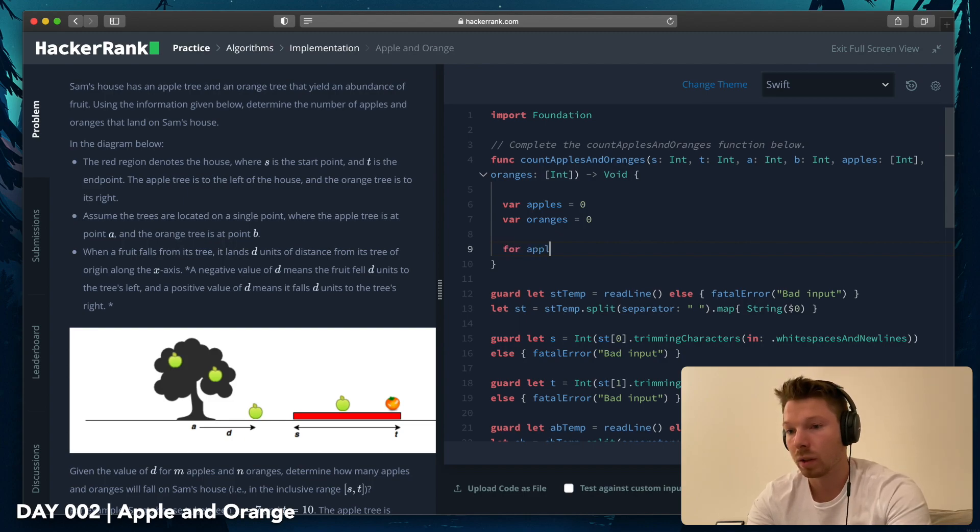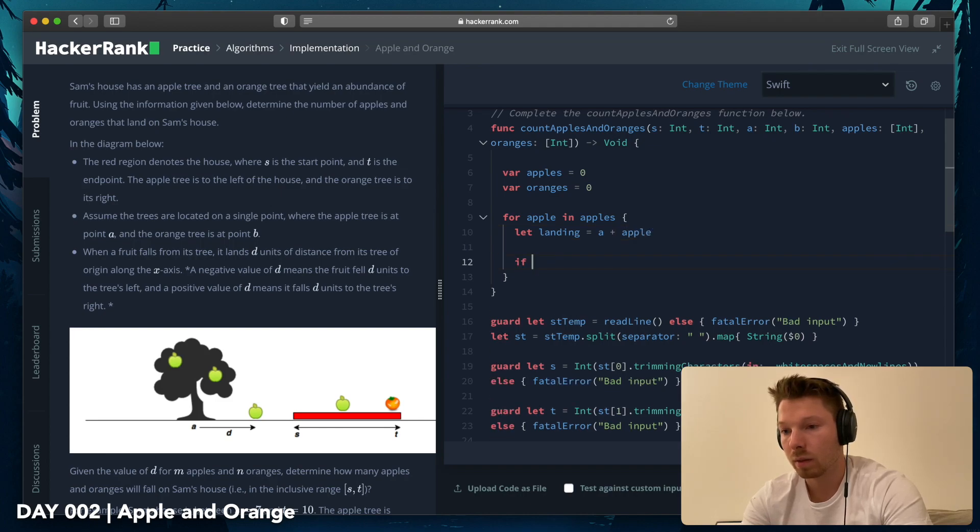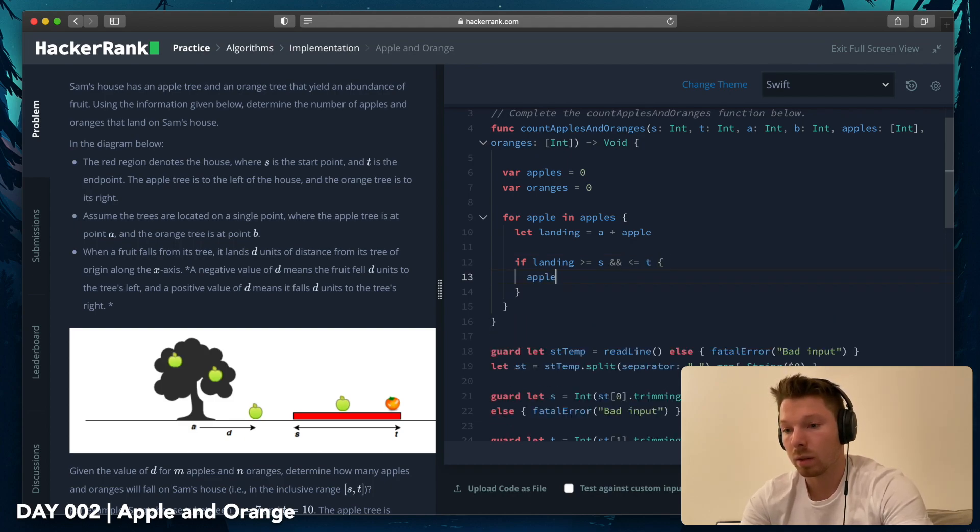And then for apple in apples, we want to say landing is A plus apple. And then if landing is bigger equal S and, or, no wait, and, because it should be within, smaller equal T, apples plus one. And we do the same for the oranges.